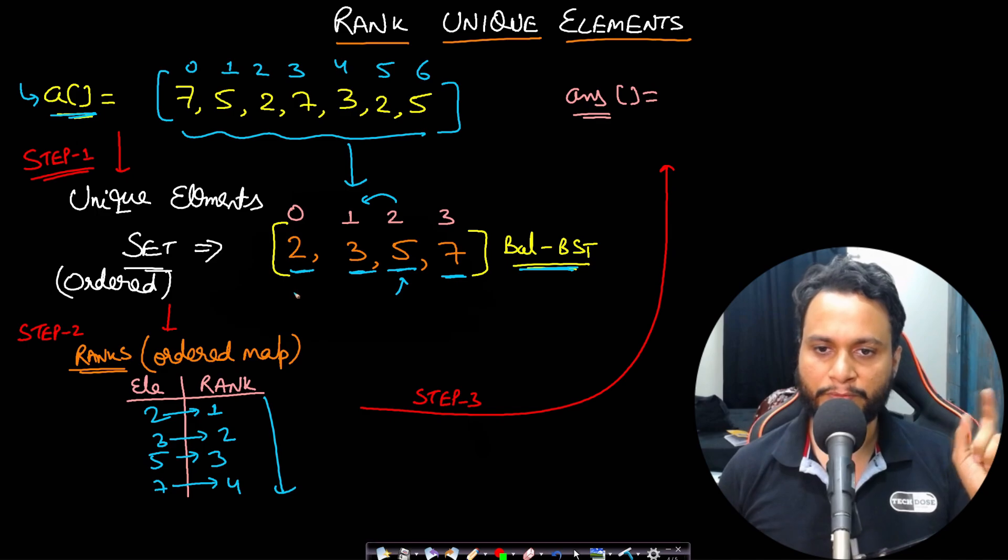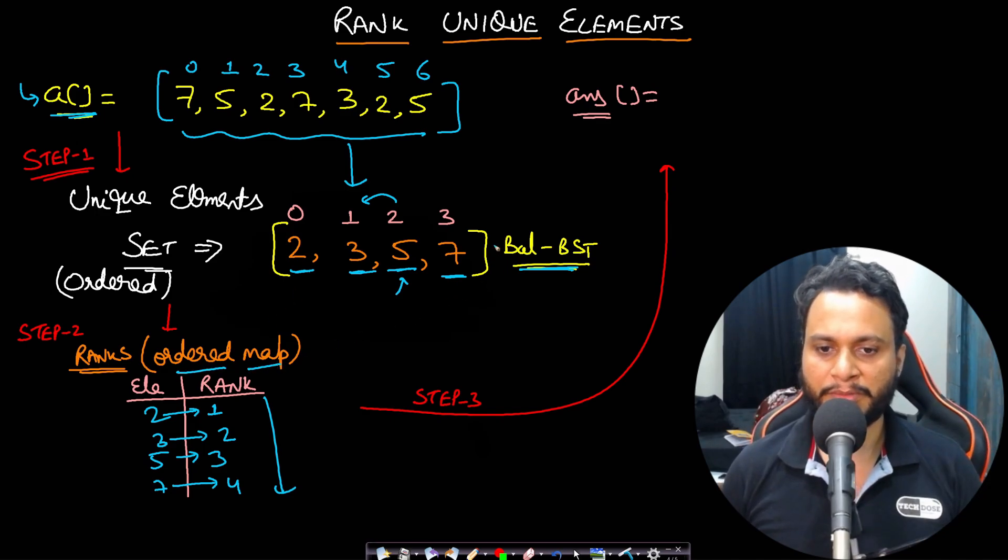And similarly, the seven which is getting as input into the ordered map will get a rank four. So now you have associated ranks with the elements and by the way, ordered map also has the same red black tree implementation, which is a balanced BST.